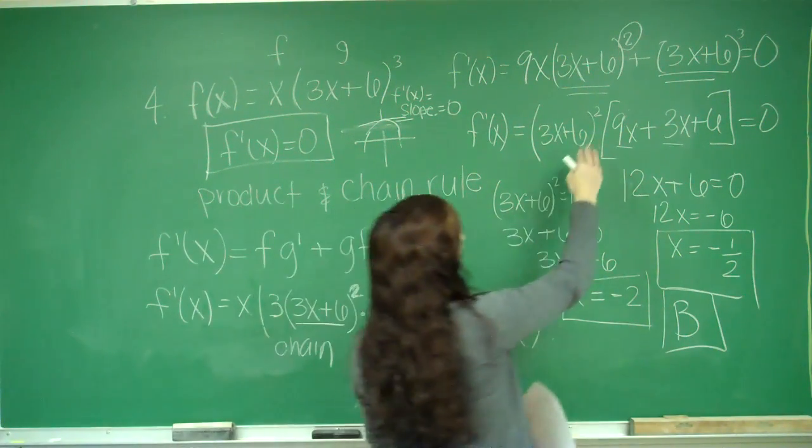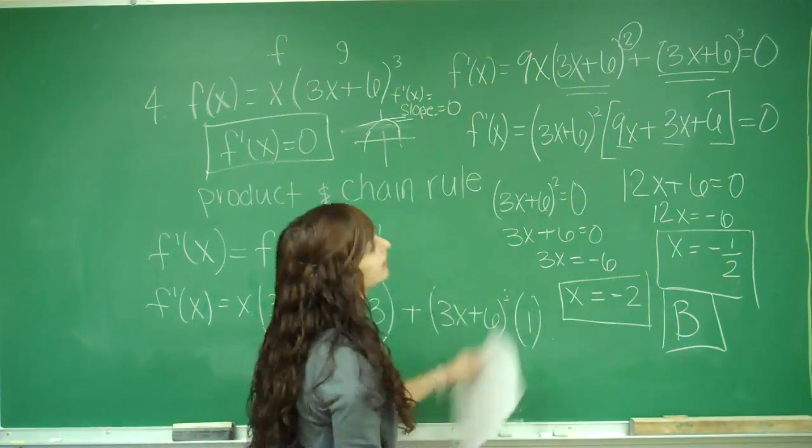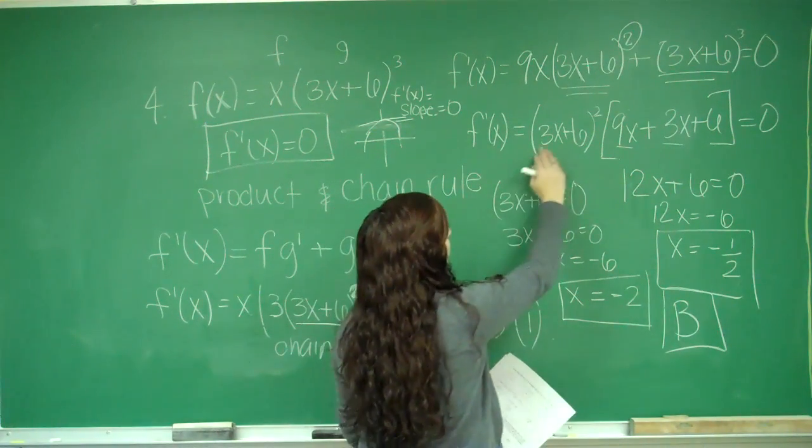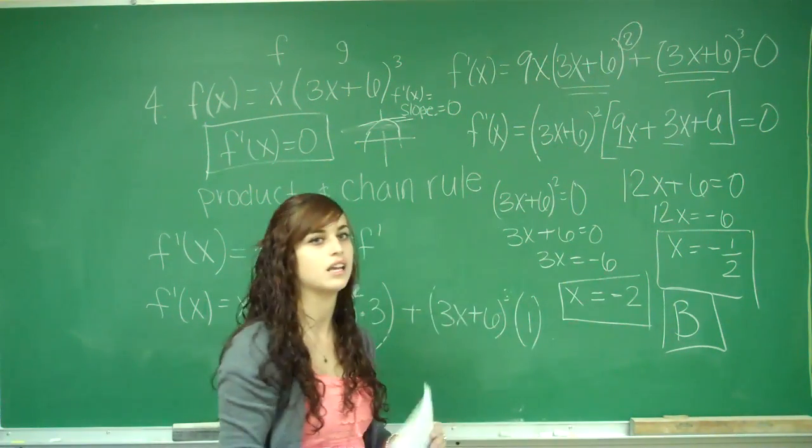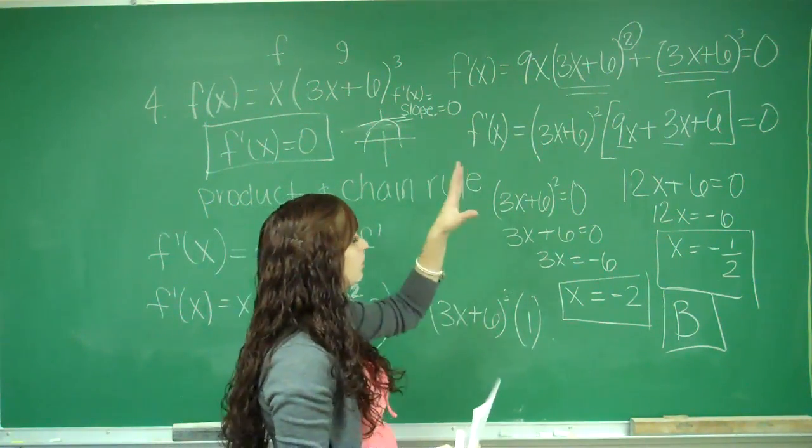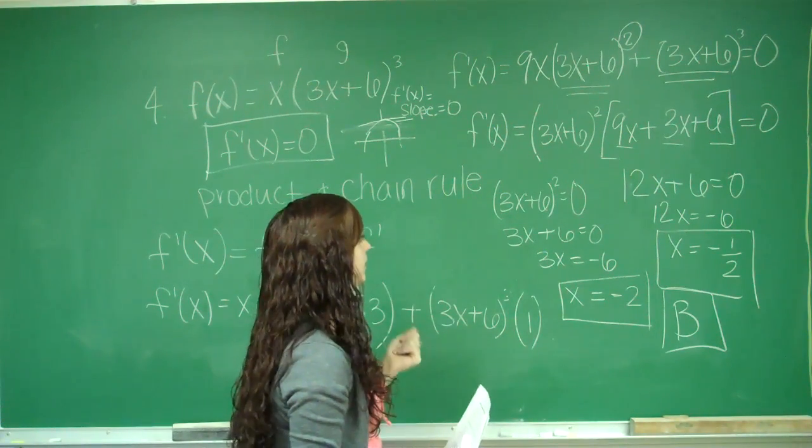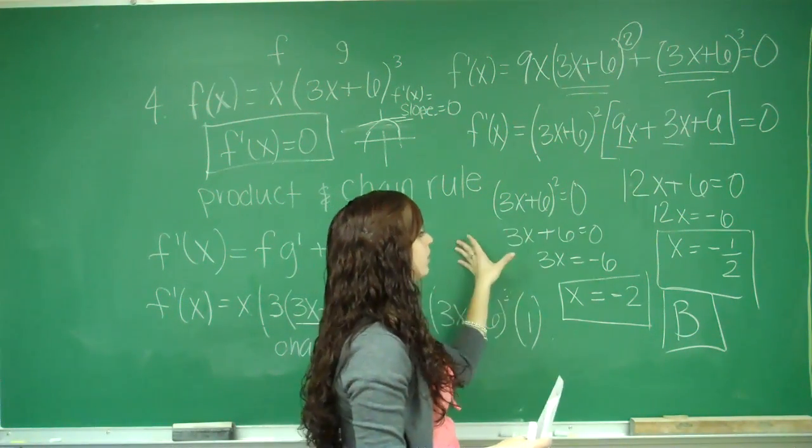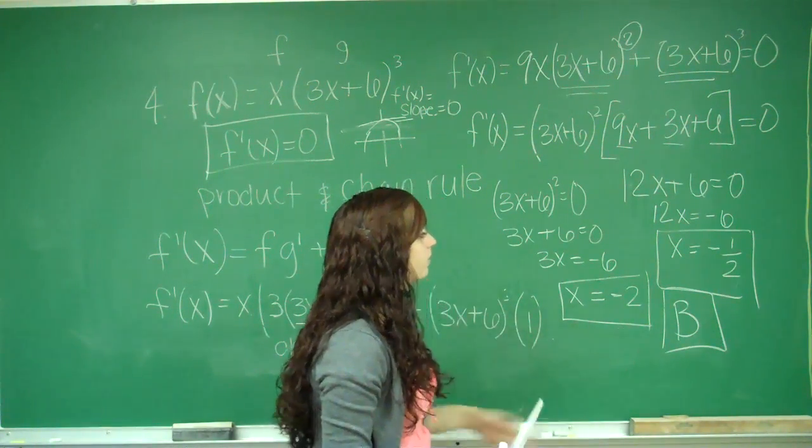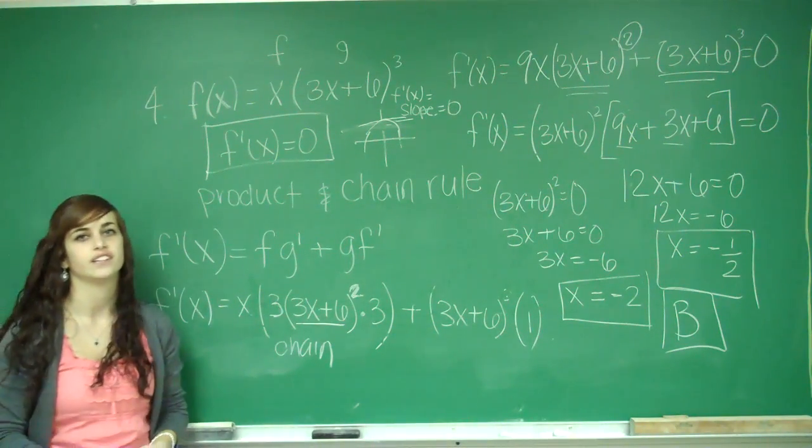And now I simplify my derivative. And then I set it equal to 0. I factored out a (3x plus 6) squared, because that term was in both. And I factored out the ones at the lowest exponent. Then I set both pieces equal to 0, and I solved for x. So this is number 4.